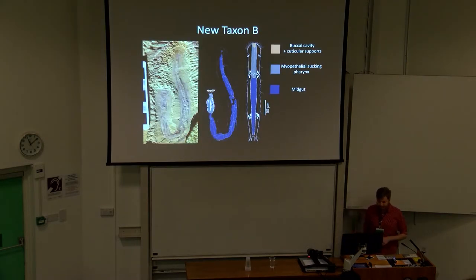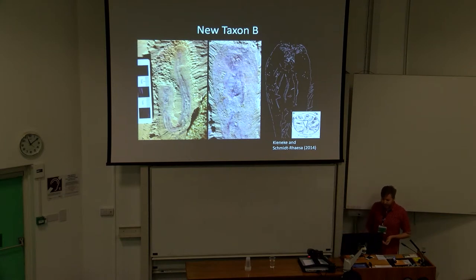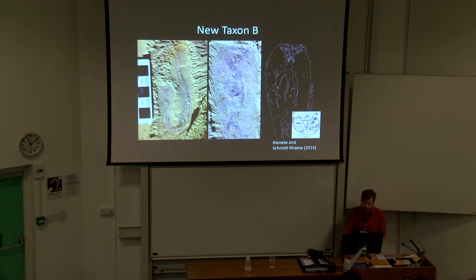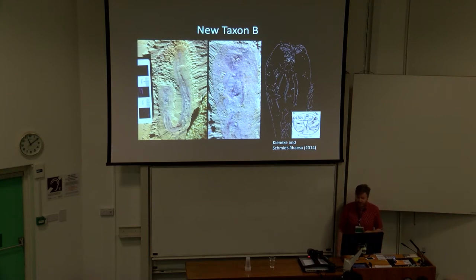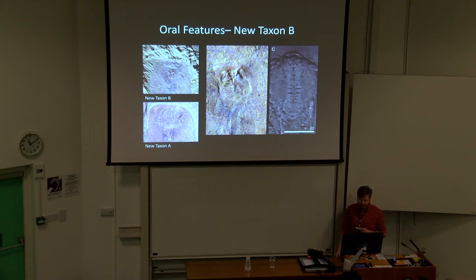We also have a second new taxon which, like the first, has a differentiated foregut. You can see the ridges defining the Y-shape of the gut, where the pharynx is cuticularized. There is also a lumpy, three-dimensionally infilled midgut. Looking more closely, you can see the three cuticular areas defining the Y-shaped lumen of the pharynx, and again a cuticularization at the front of the head forming a distinct plate. This animal is very large compared to extant gastrotricha — several centimeters in length.